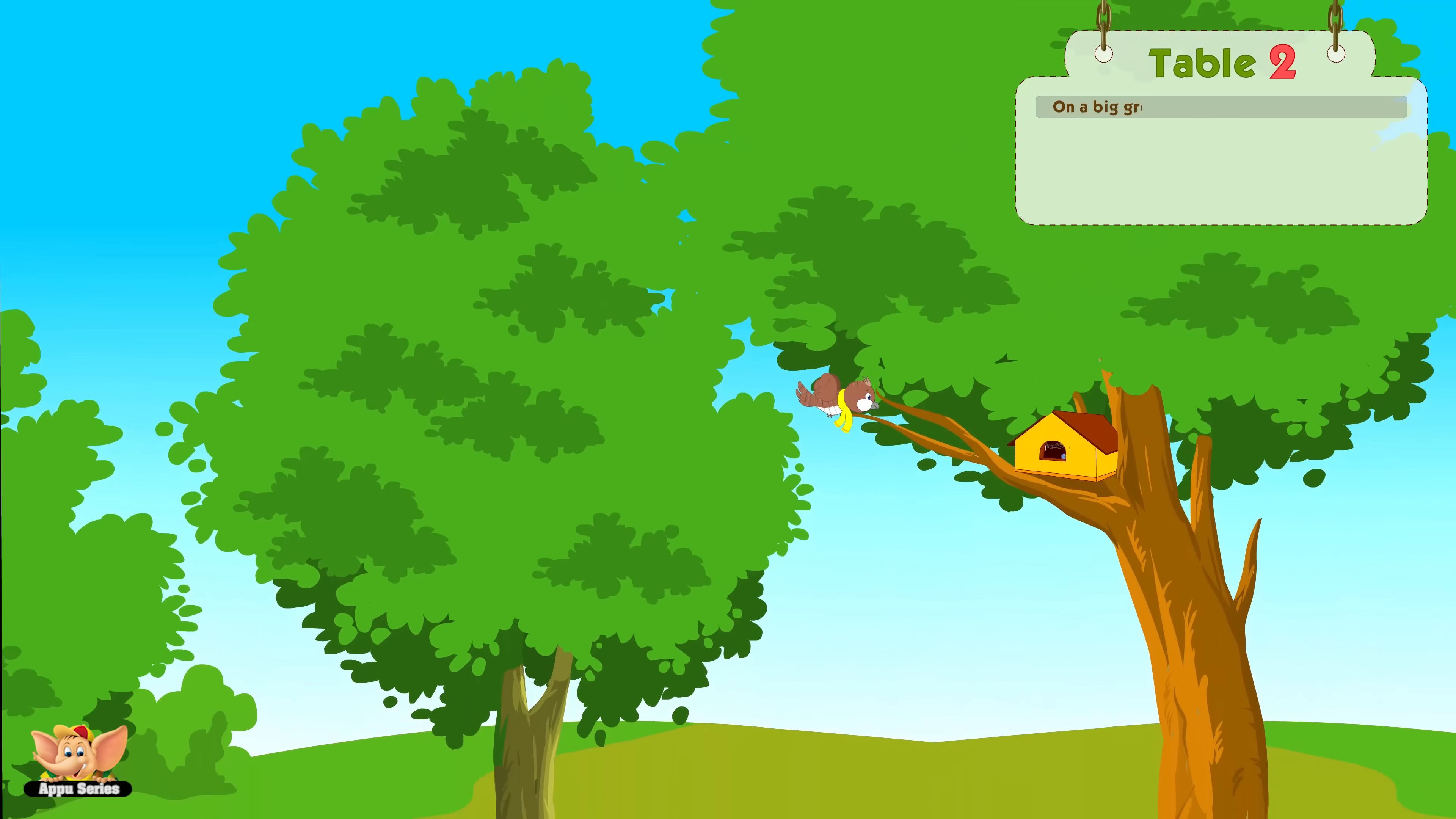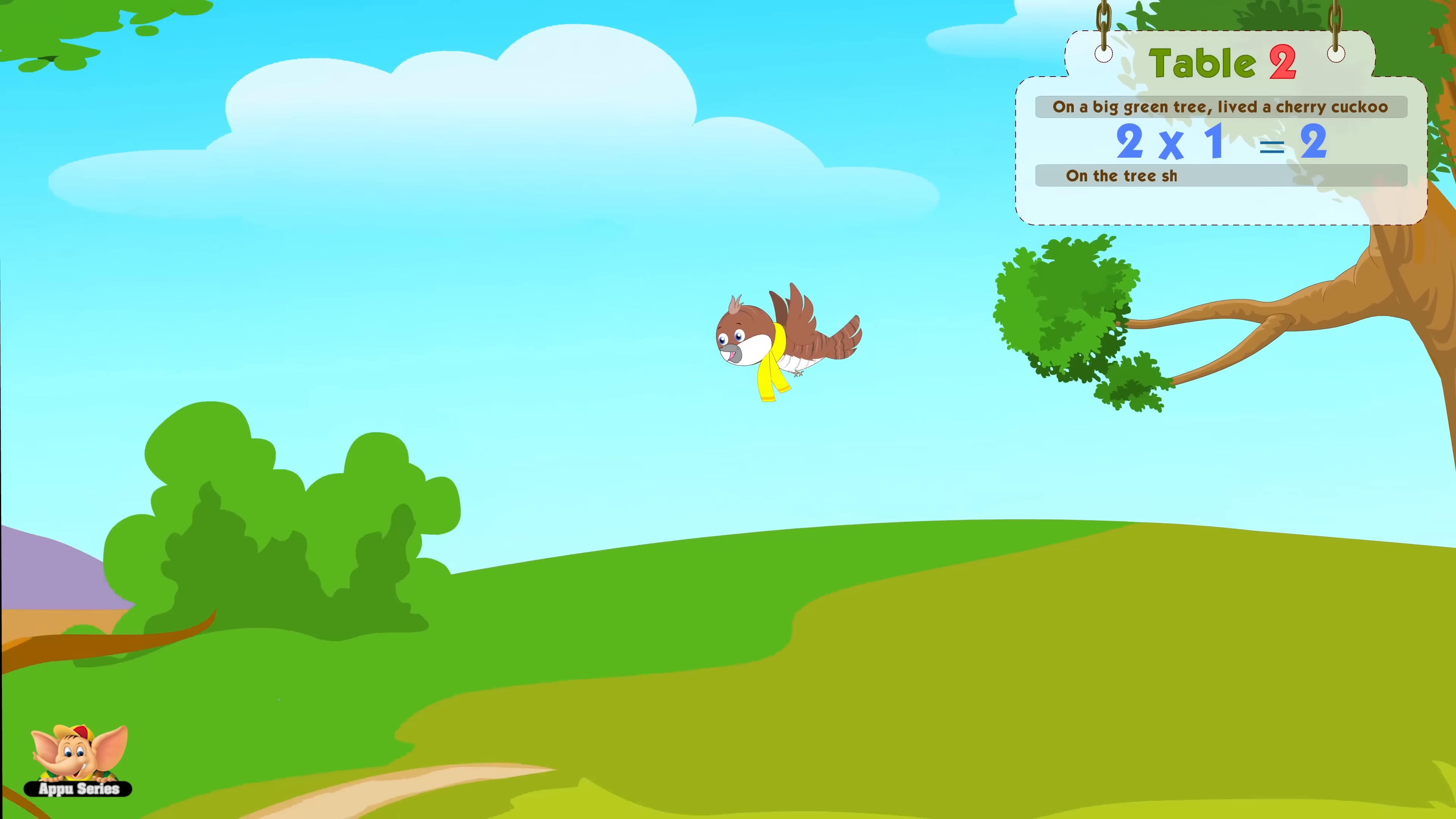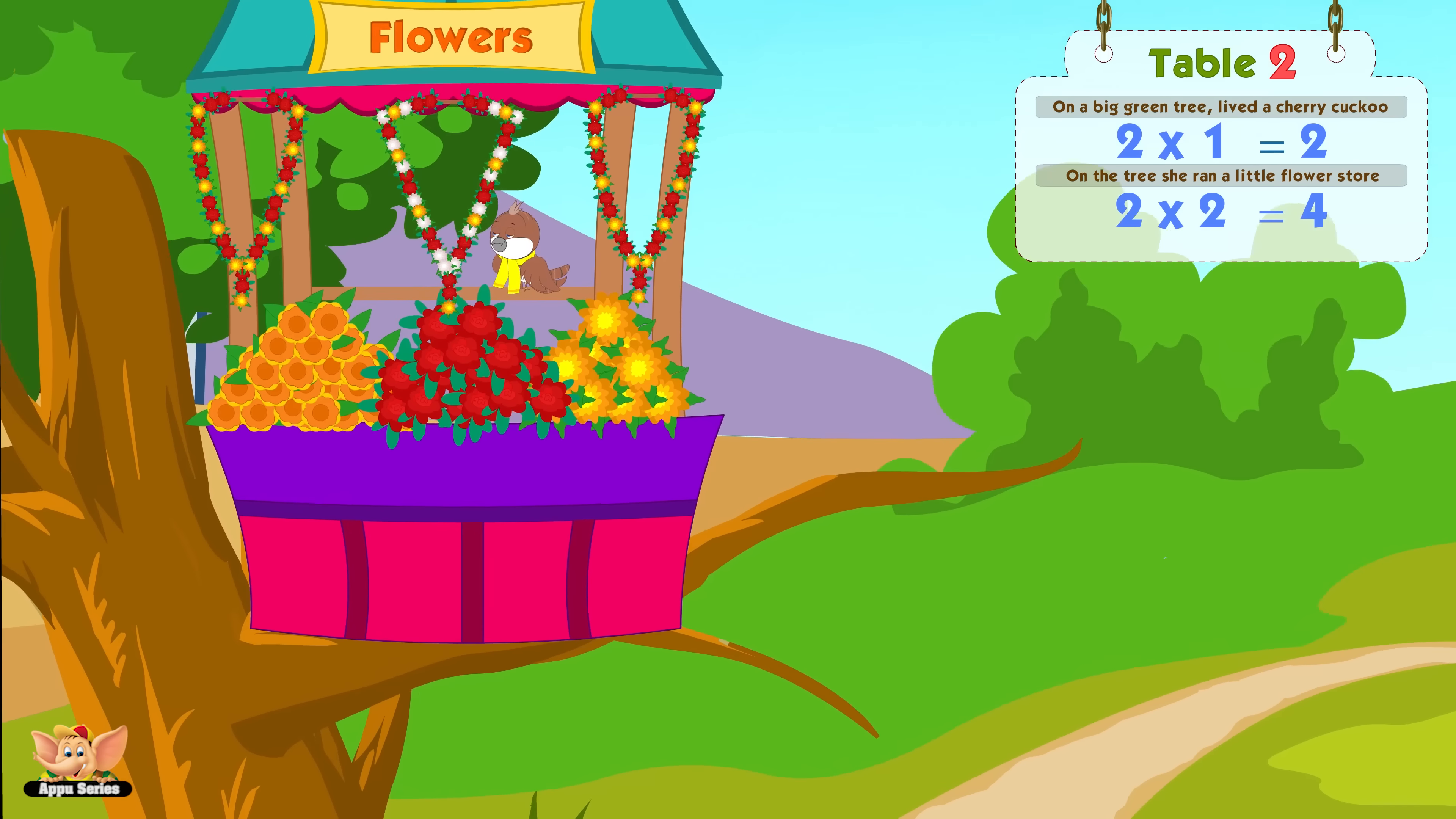On a big green tree lived a cherry cuckoo. To once is number two. On the tree she ran a little flower store. Two twos are number four.